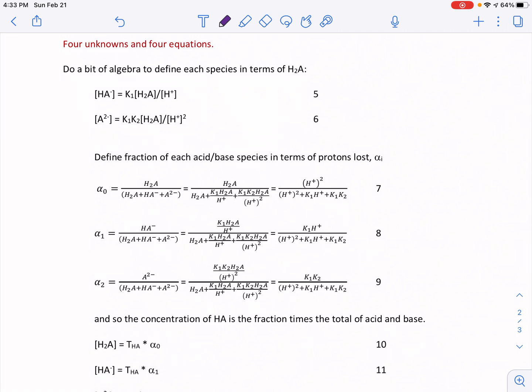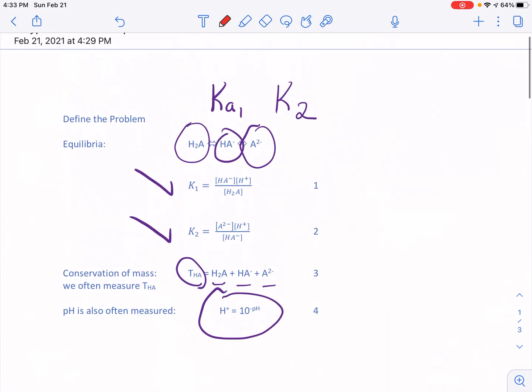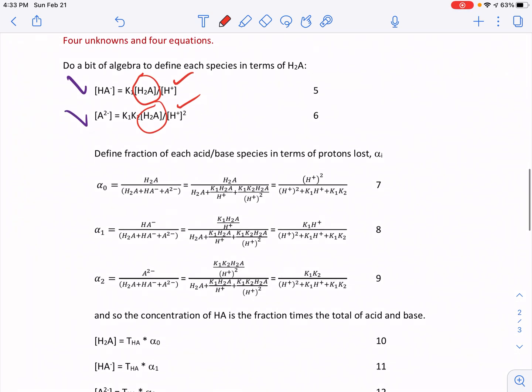I'm going to begin by redefining HA and A2- in terms of H2A and H+. So you will notice that equation six is just the same as equations two and three in the above page. You just multiply equations one and two together, and then do a little bit of reorganization, and you get equation six.